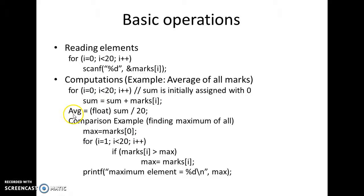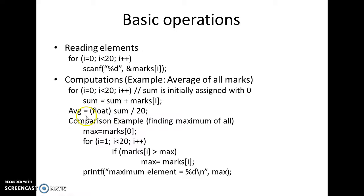Now we will find the average. Average is equal to sum divided by 20 — this is the simple formula. Since average is a floating point variable, I am typecasting here. I assume that you have already learned typecasting in your earlier sessions.